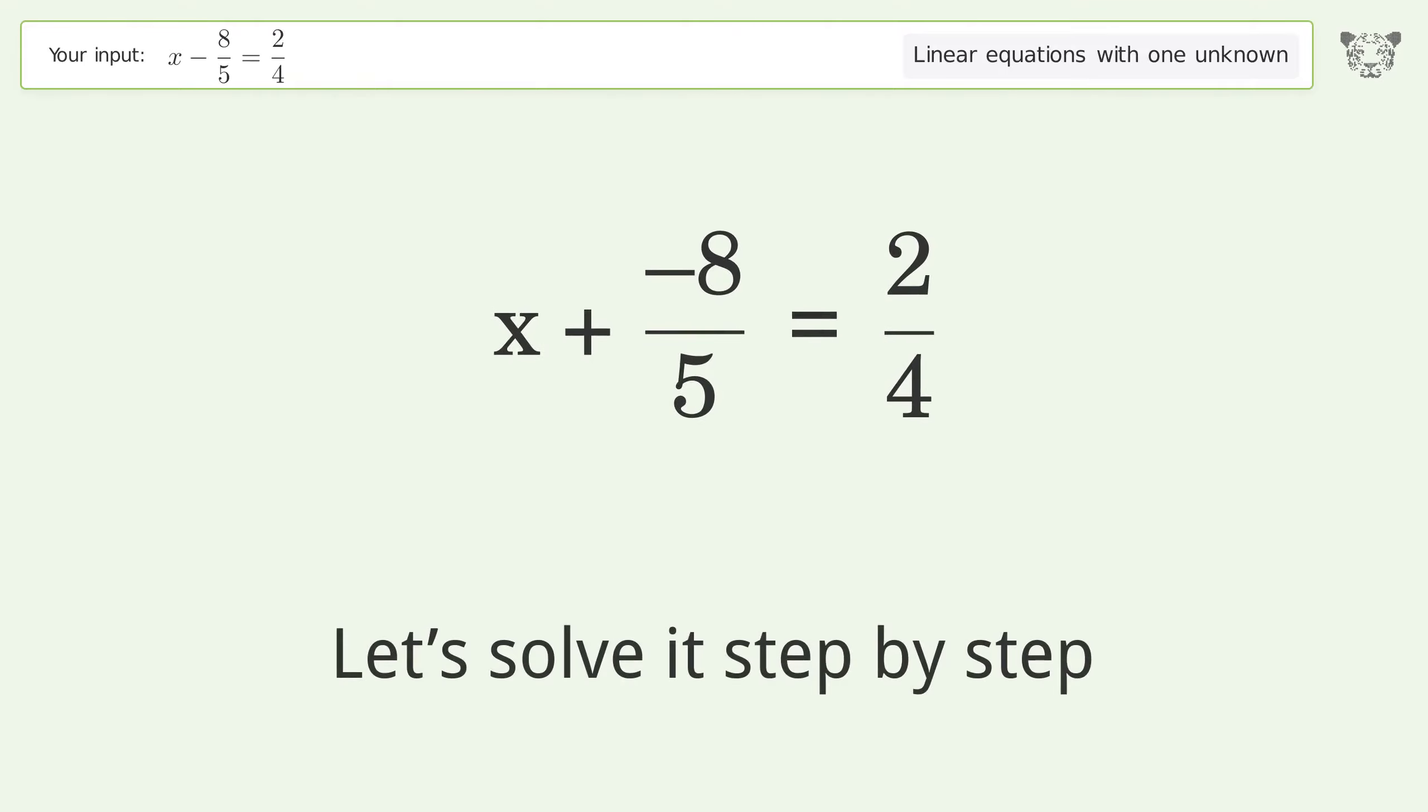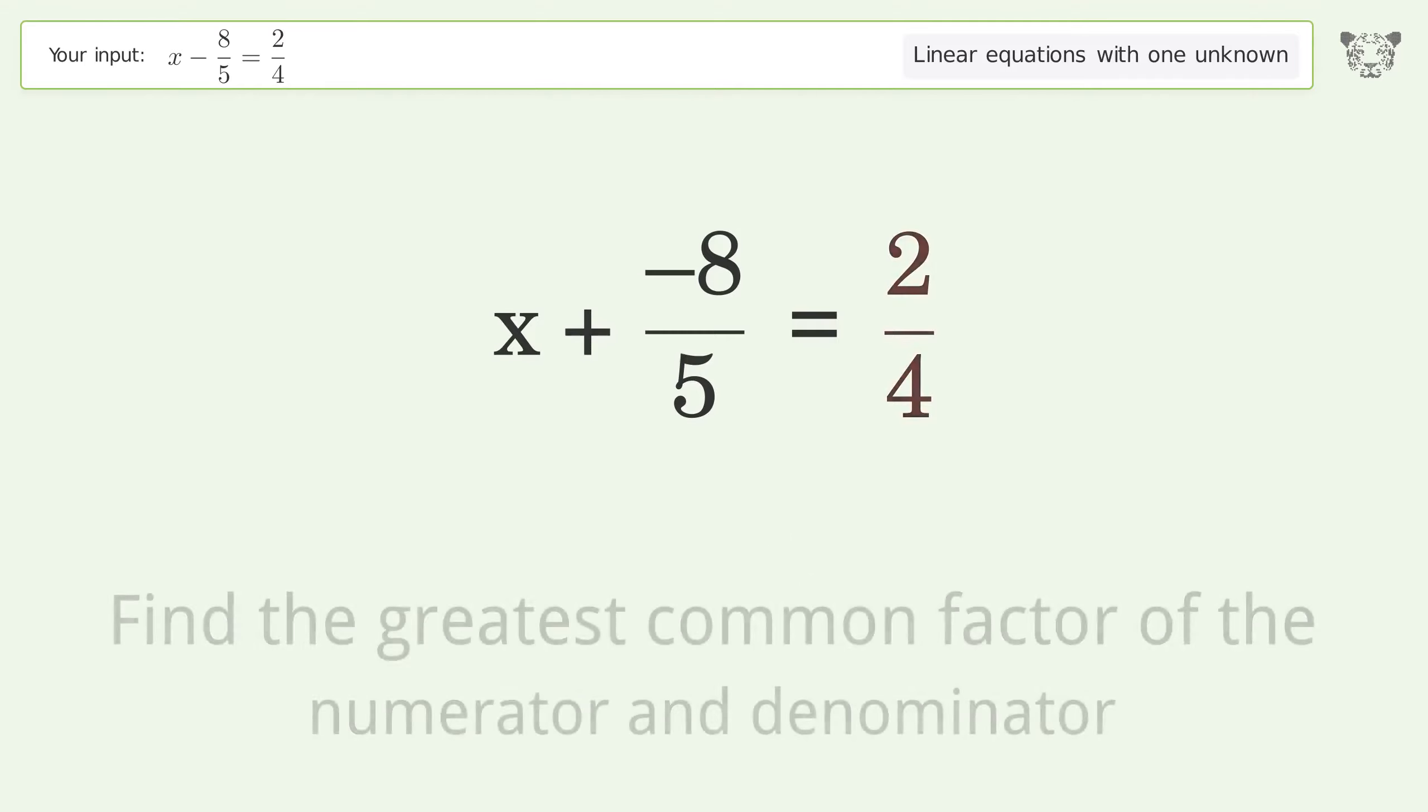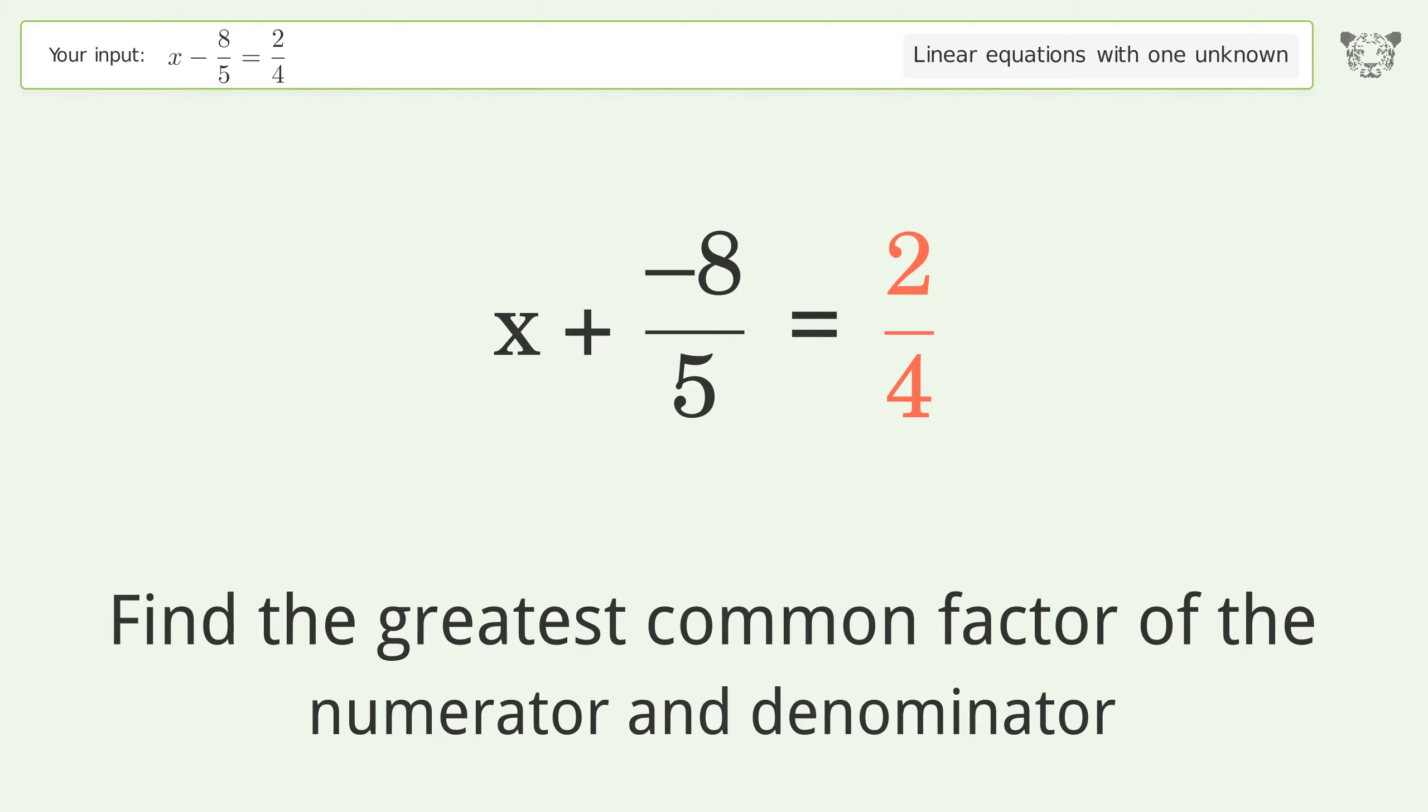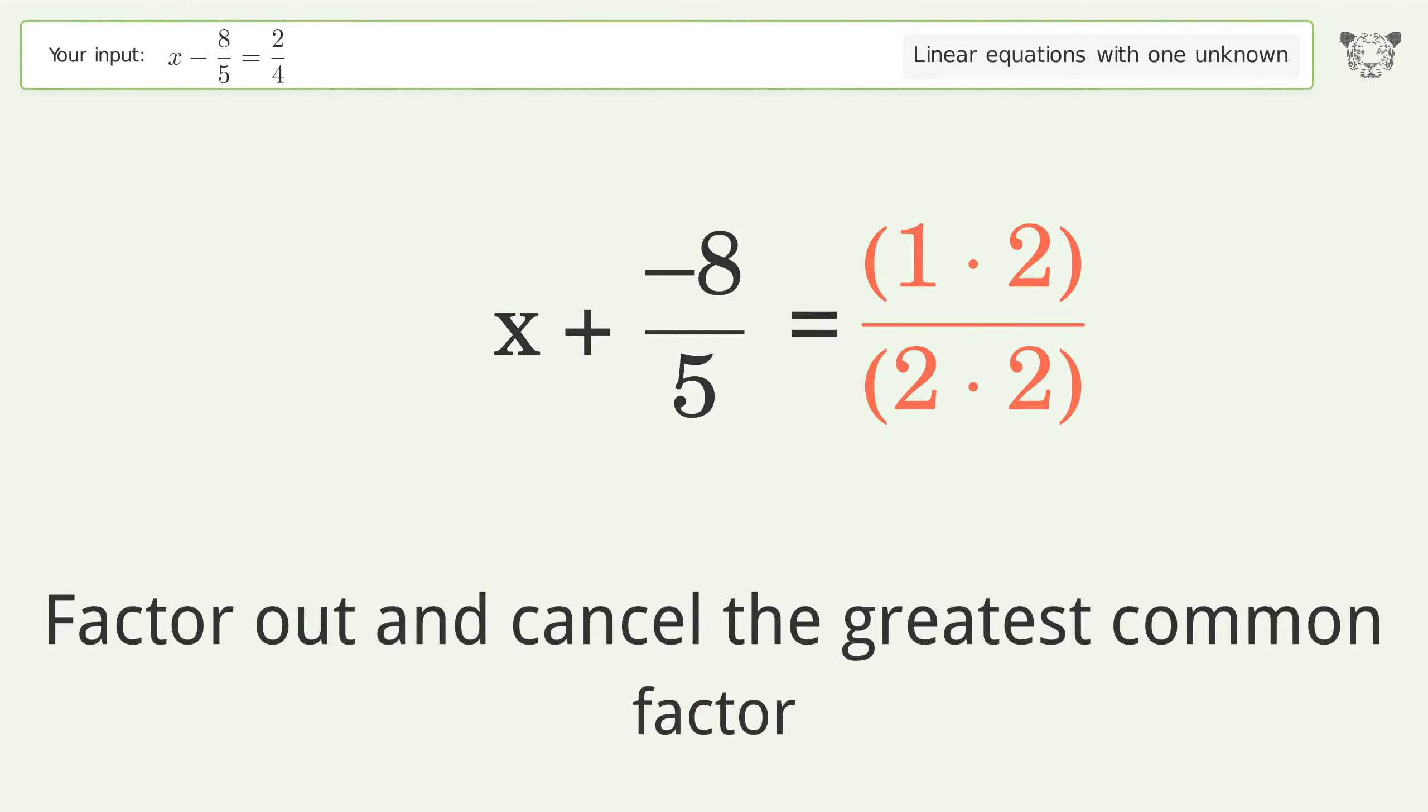Let's solve it step by step. Simplify the expression. Find the greatest common factor of the numerator and denominator, factor out, and cancel the greatest common factor.